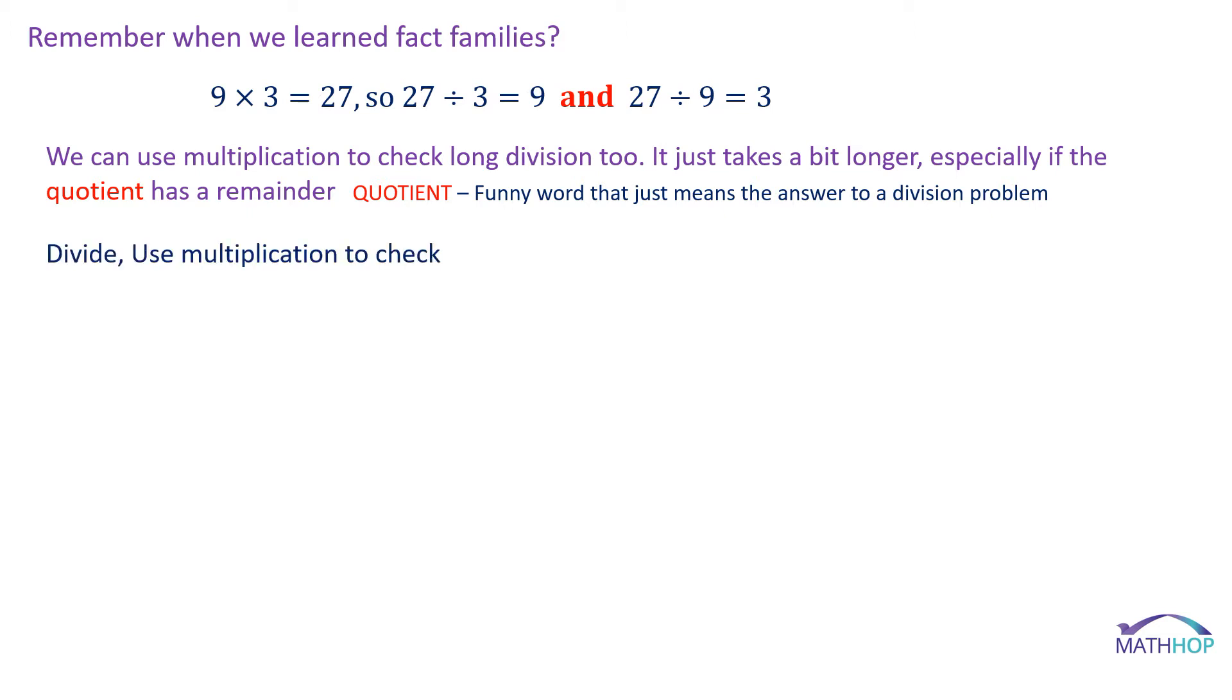So we're going to divide and use multiplication to check. And we have a four digit number divided by a two digit number. So let's first remember that we could write 6,691 divided by 28 as a fraction. We could write this as 6,691 all over 28. A fraction bar is just shorthand for division. So knowing that setting this up might be easier. The first number goes in the box, or you could always remember the top number in the fraction goes in the box. So the first number or the number on the top in the fraction goes in the box. So we set it up like this.